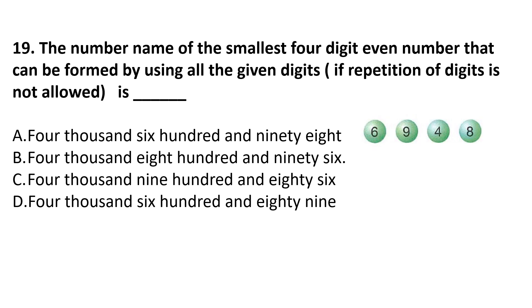Question number 19. The number name of the smallest 4-digit number that can be formed by using all the given digits, if repetition is not allowed. We write the digits in increasing order: 4, 6, 8, 9 — that gives us 4689. The answer is option D.